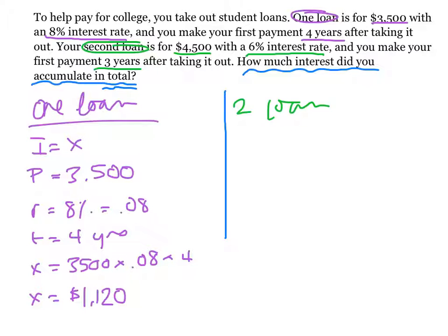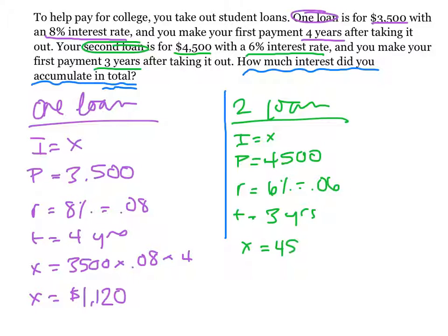Now let's look at our second loan. I is what we're finding. The principal amount is how much we took out, so $4,500. It has a 6% rate, so .06 in decimal form. And we took it out for 3 years. So X equals $4,500 times R, .06, times T of 3. This interest ends up being $810.